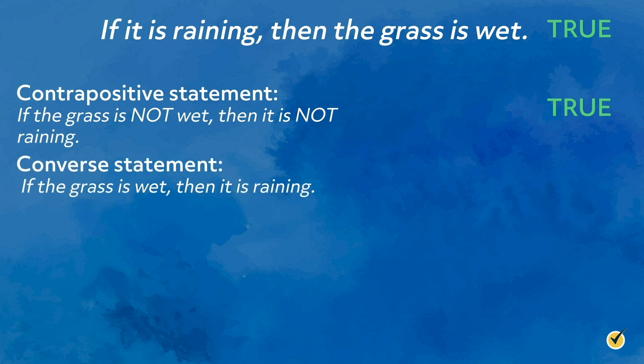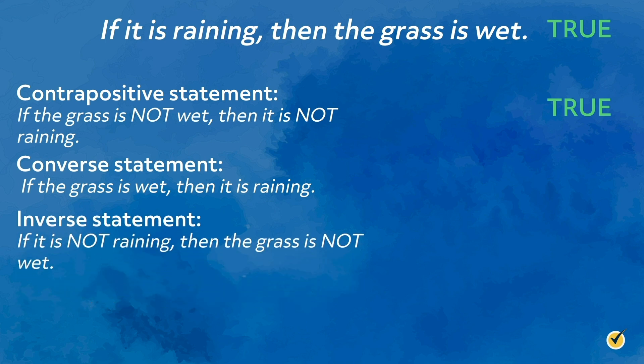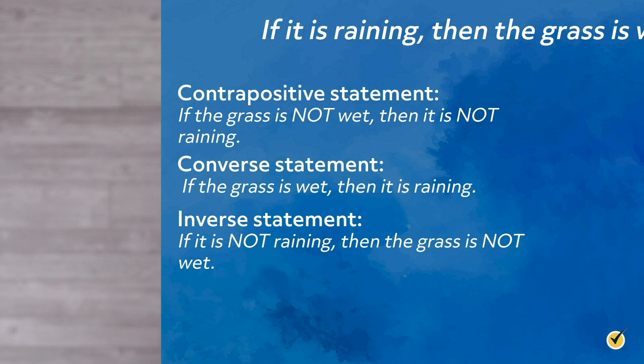Likewise, the converse statement — 'if the grass is wet, then it is raining' — is logically equivalent to the inverse statement — 'if it is not raining, then the grass is not wet.' These relationships are particularly helpful in math courses when you are asked to prove theorems based on definitions that are already known. Much of that work is beyond the scope of this video, but the following examples will help to illustrate the relationships of logically equivalent statements.